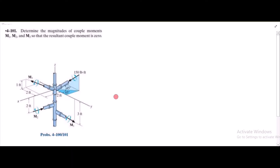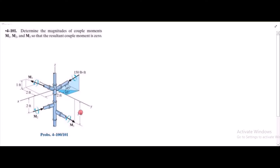To solve this problem, first of all we have to express these moments in Cartesian vector form. If you look at the figure, M1 is parallel to the y-axis, so it has only one component in the y-axis direction. Therefore, M1 is equal to M1j.